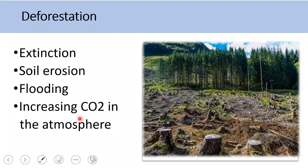The last impact is increasing carbon dioxide in the atmosphere. Trees absorb carbon dioxide from the atmosphere through the process of photosynthesis — this is the main way for carbon to enter living things and be removed from the atmosphere. Cutting trees means fewer trees are available to absorb carbon dioxide, so we end up with more CO2 in the atmosphere, which cannot be absorbed and will lead to global warming.